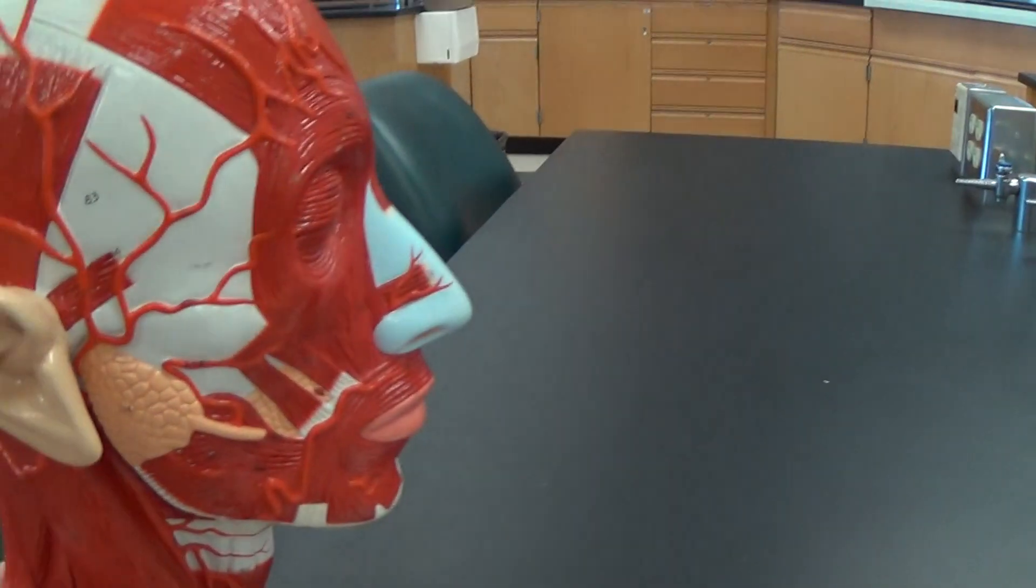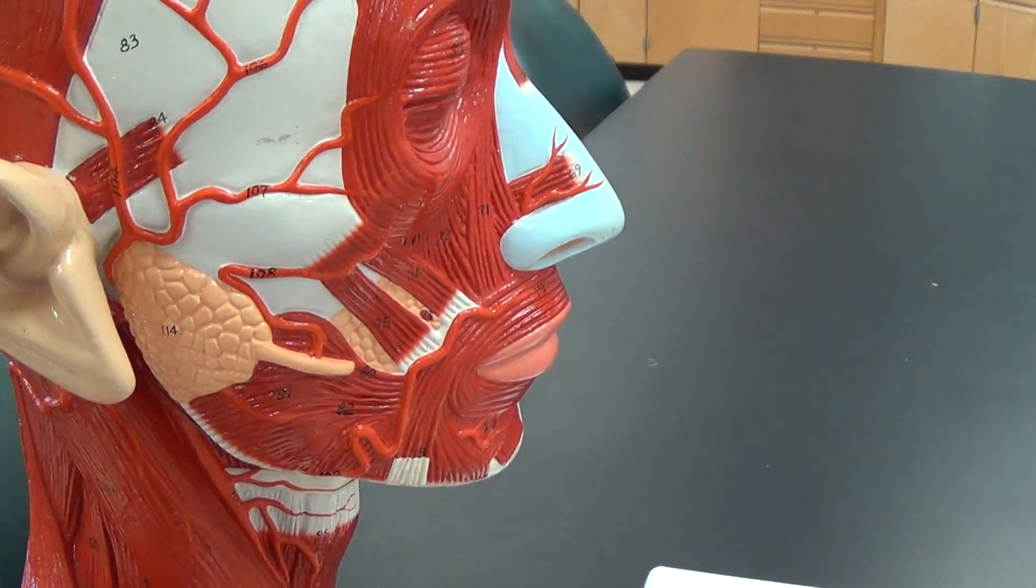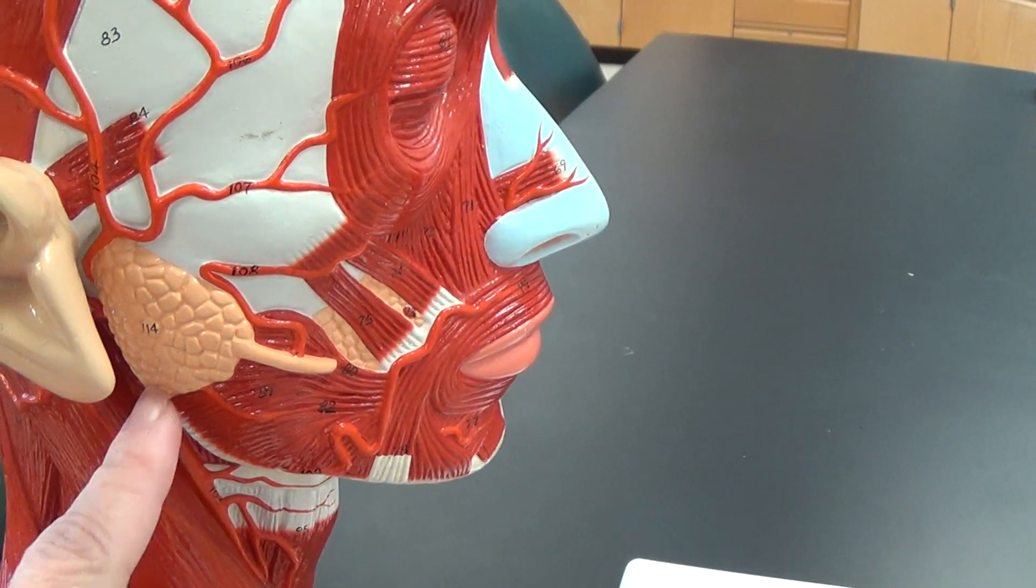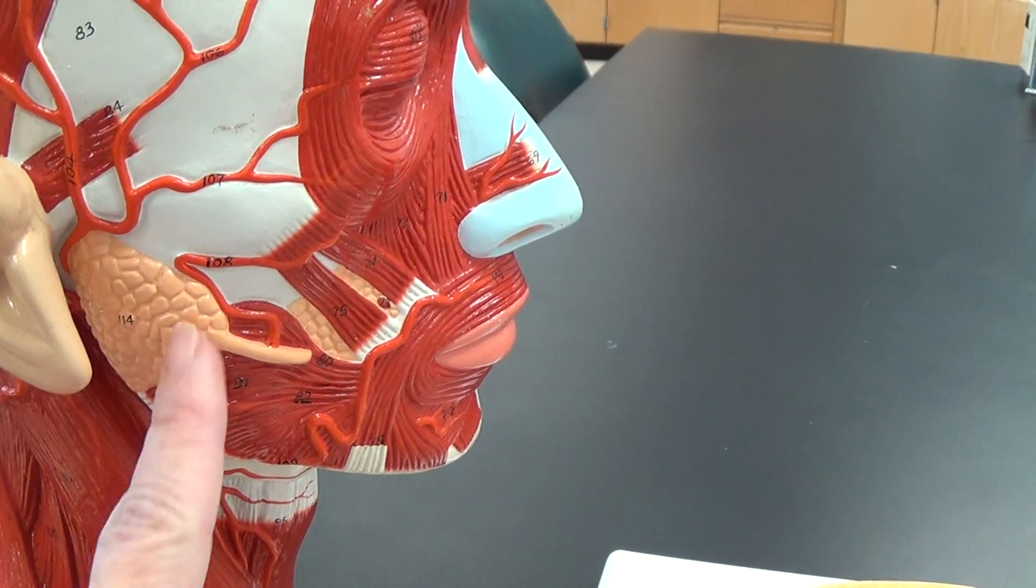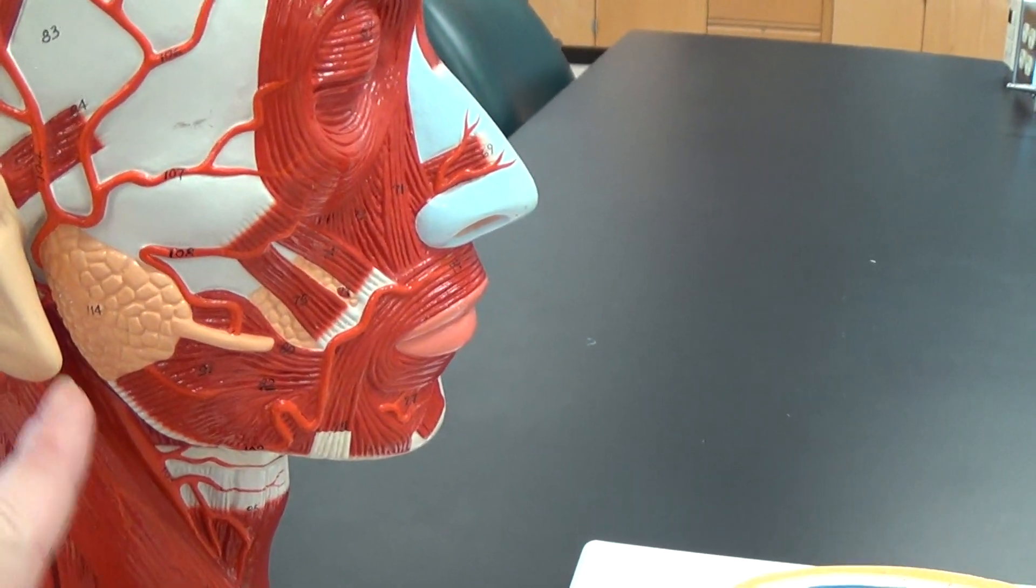Now, the other thing that's part of the digestive system are some salivary glands. This is the parotid gland here—kind of rhymes with carotid from the neck.